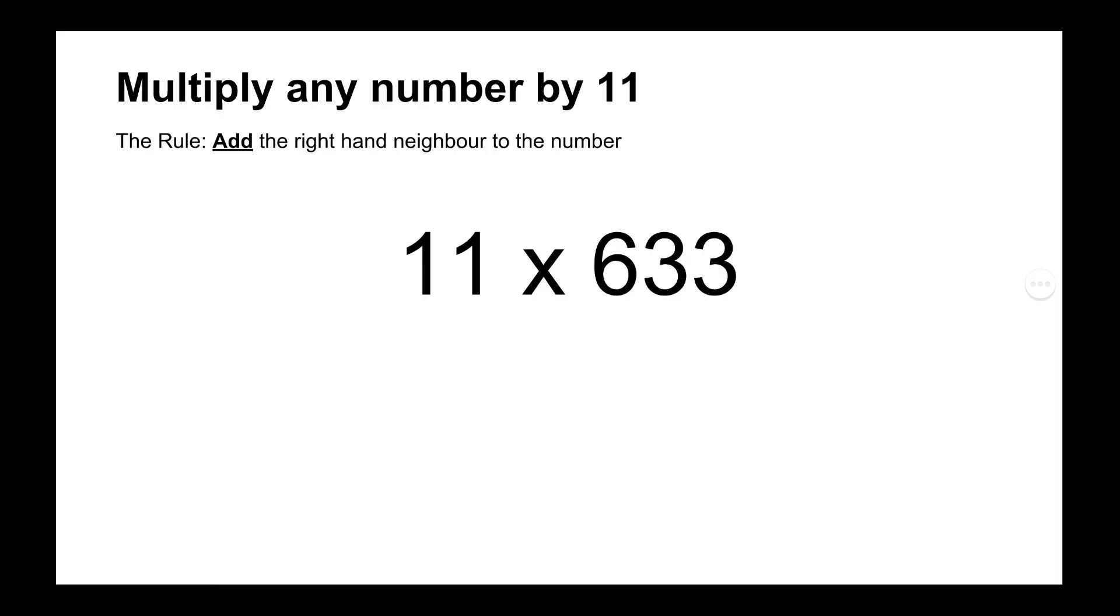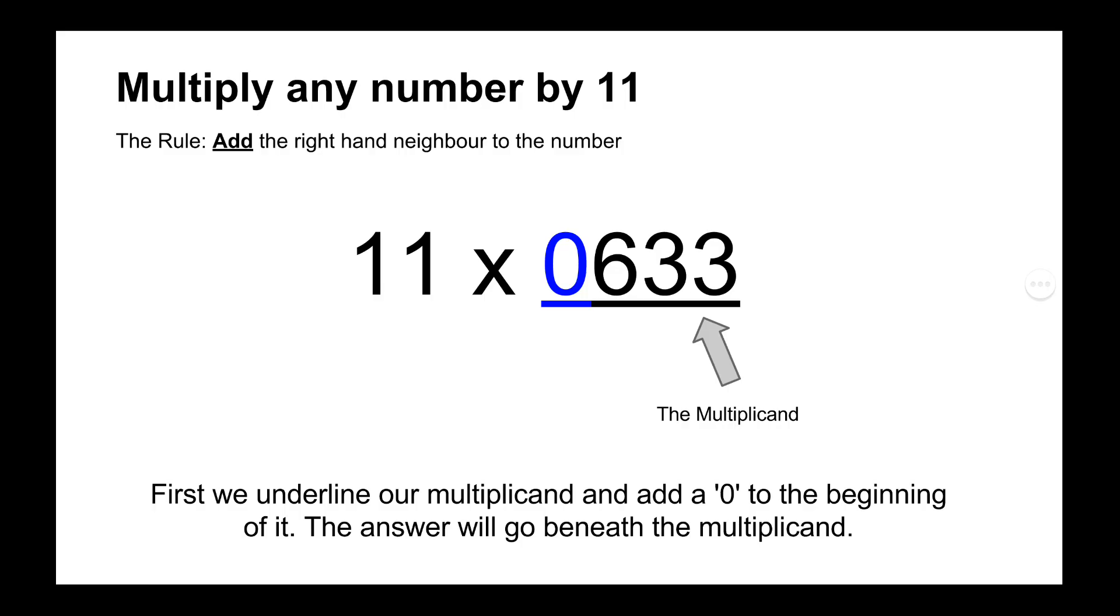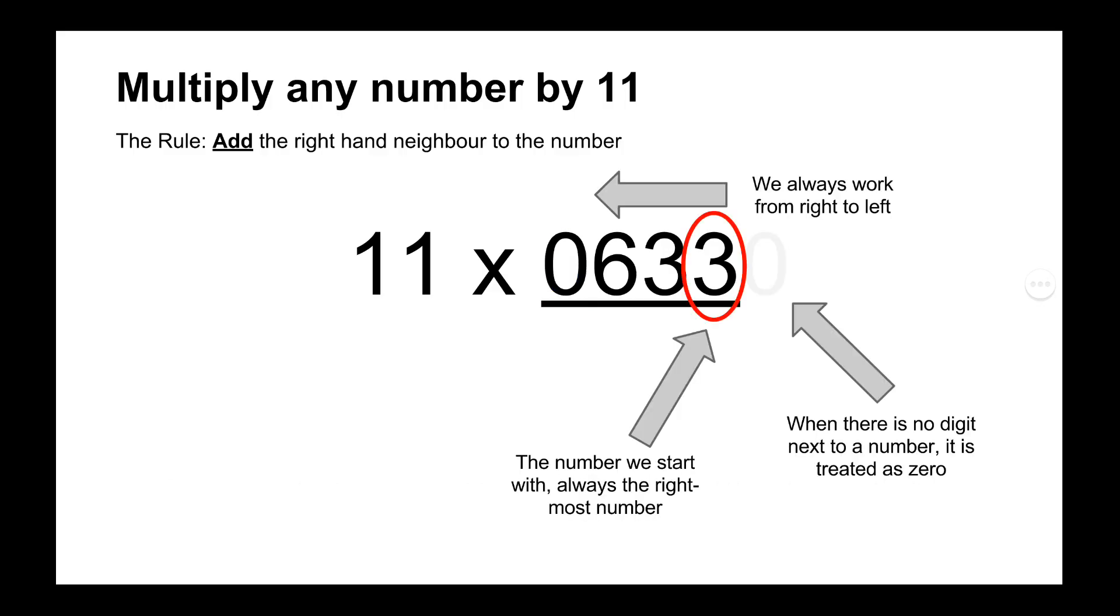So we'll start off with an easy example which is 11 times 633, and using our rule we've got to remember add the right-hand neighbor to the number. Now the first thing that we have to do is to add a zero to the beginning of our multiplicand, and the multiplicand is the number on the right-hand side which we're going to be multiplying by 11. Now we add a zero to the beginning of it and then we underline it and then we move on.